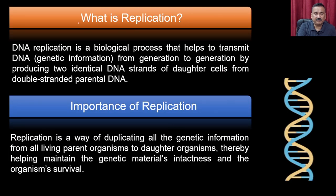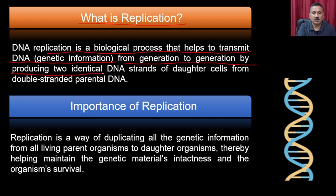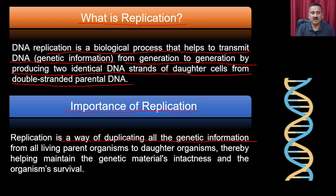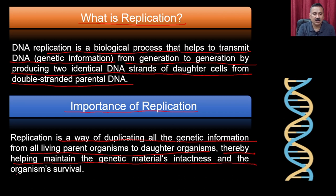DNA replication is a biological process that helps transmit DNA or genetic information from generation to generation by producing two identical DNA strands in daughter cells from the double-stranded parental DNA. Replication is a way of duplicating all the genetic information from parent organisms to daughter organisms, thereby helping maintain genetic material intactness and organism survival.